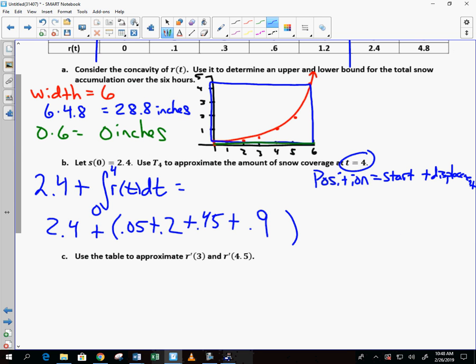So we've got 2.4 plus 0.05 plus 0.2 plus 0.45 plus 0.9. So this ends up being 2.4 plus 1.6 is 4 inches. So that's how much snow we have at time equals 4. At time equals 4, we have the 2.4, which we started with, plus the 1.6 that we've accumulated. Great example of an AP question.